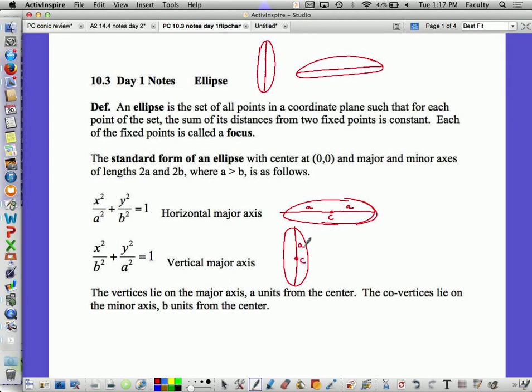And then if the a is underneath the y, like in the second one, x squared over b squared plus y squared over a squared equals 1, this means it's a vertical major axis. So what's different is a is always the bigger number. When we get to the hyperbola, a is always going to be in the first position, and it's not necessarily bigger. And so the good news is when we do our open note quest next week, you can write all sorts of notes all over this.